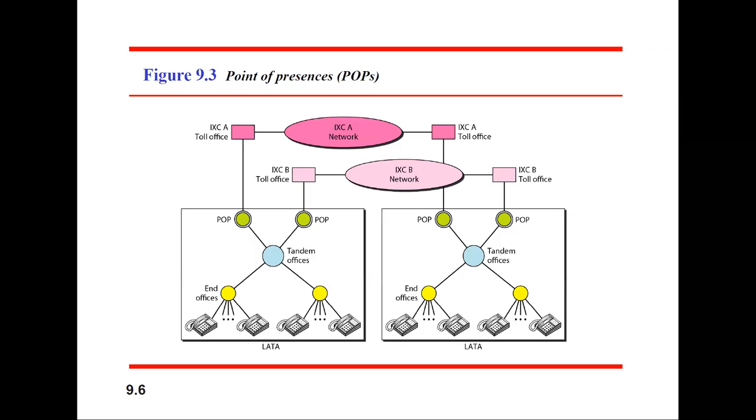This figure shows point of presences. A big network divides into two offices, IXCA, and the signal is sent to each central office, which is the tandem office, and from each tandem office, signals are sent to the end offices. The end offices are the telephones. This gives a general picture of how this network works.